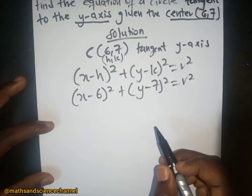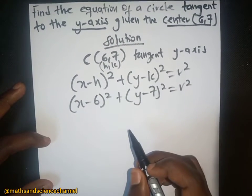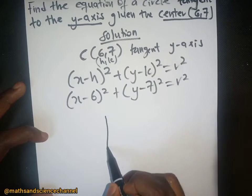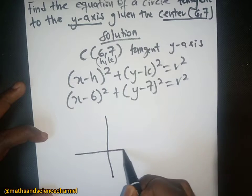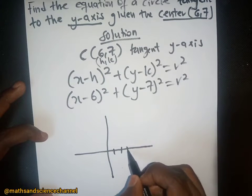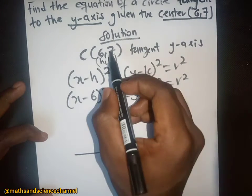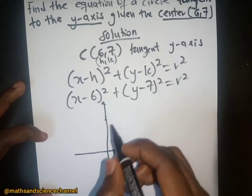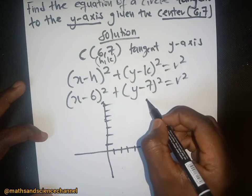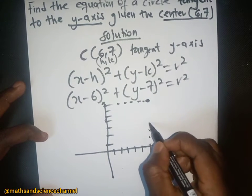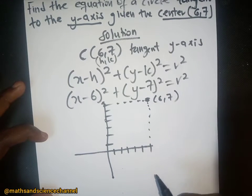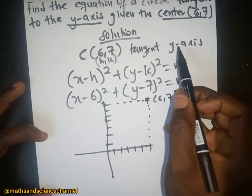To find the radius, we are going to sketch the center on a Cartesian plane. On the x-axis we have six — one, two, three, four, five, six — and on the y-axis we have seven — one, two, three, four, five, six, seven. So we can place the center somewhere at the point six and seven.